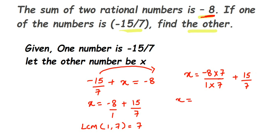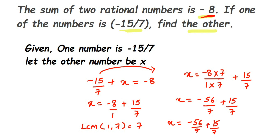So X equals -56/7 plus 15/7. The denominators are now the same, so we combine the numerators. Since the signs are different — one negative, one positive — we subtract: 56 minus 15 gives 41, and the sign is negative. So the result is -41/7.